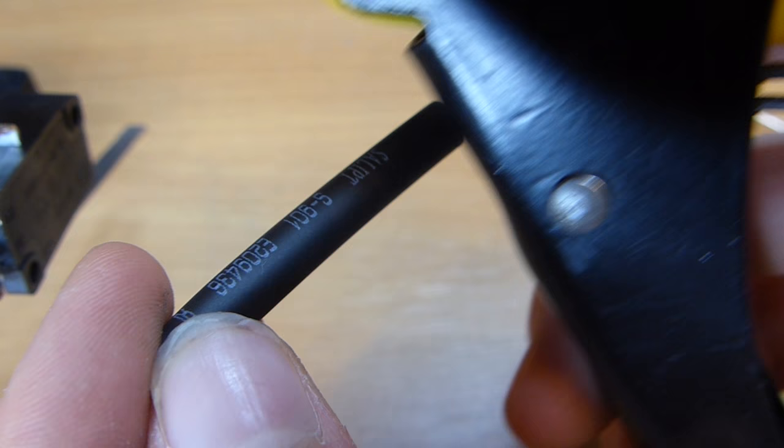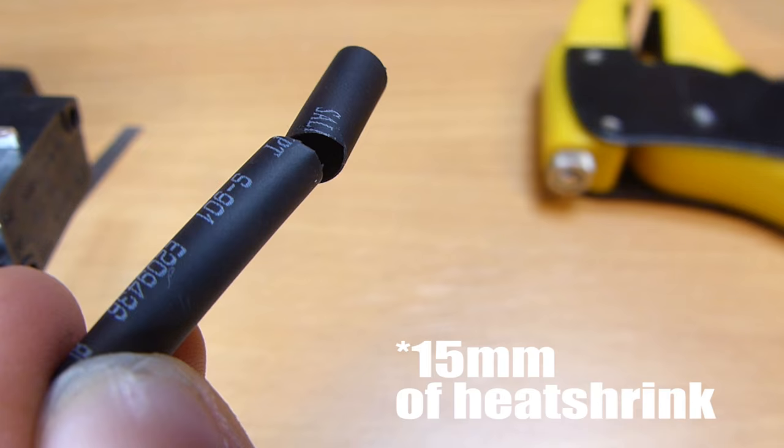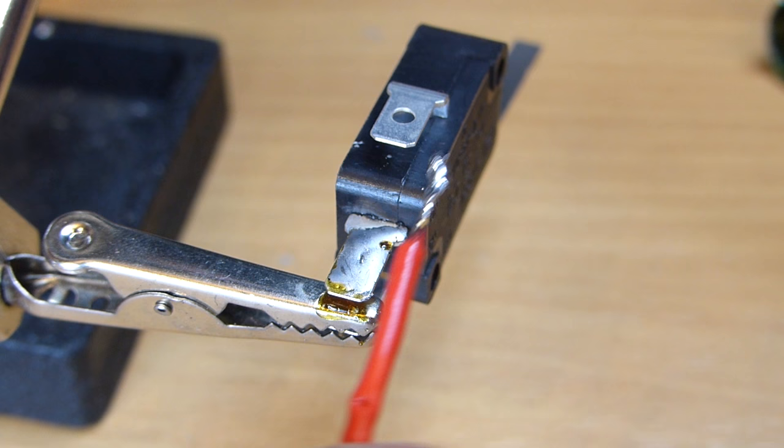Cut off about 5mm of heat shrink and slip it over the wire. Then, place the wire onto the terminal and heat it up to melt them together.